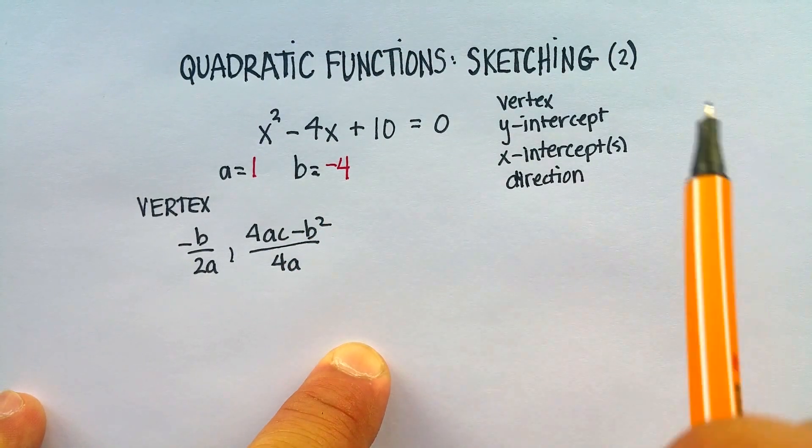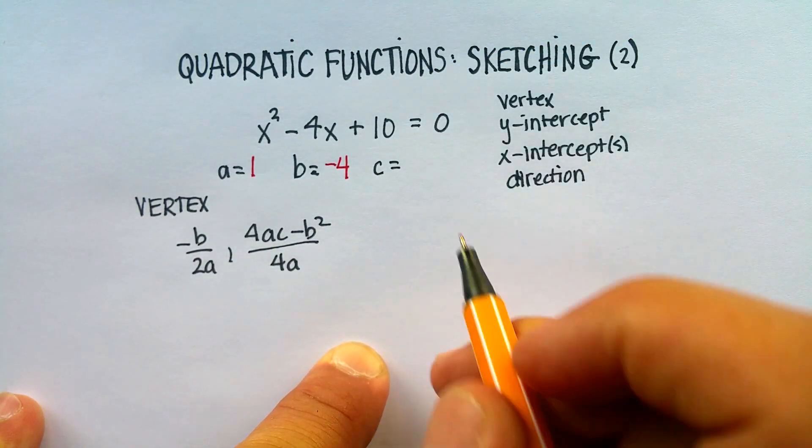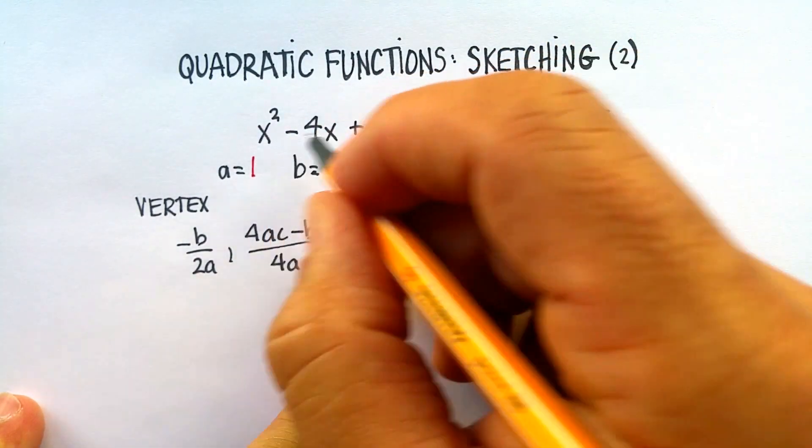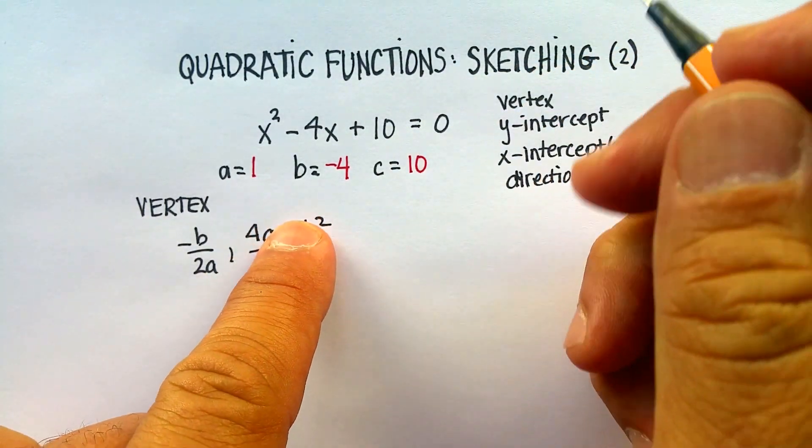And finally, the c is just the constant, that number at the very end in the standard form. One thing I wanted to mention: make sure that your quadratic function is in standard form.